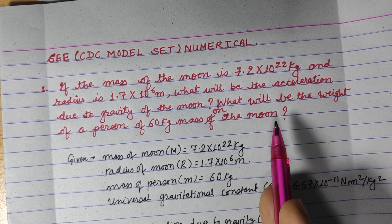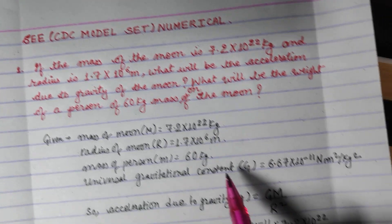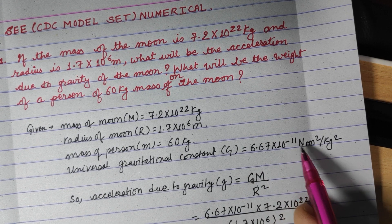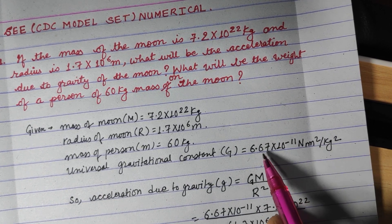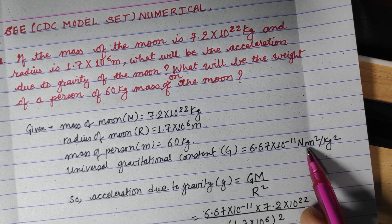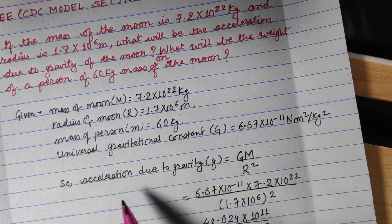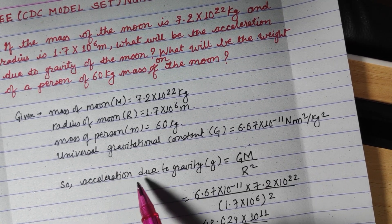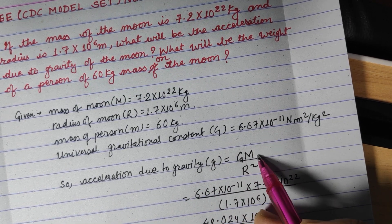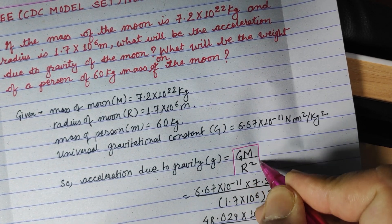For Universal Gravitation, we need the standard value of capital G: 6.67 into 10 to the power minus 11 Newton meter square per kg square. Now we need to write the formula — acceleration due to gravity: small g is equal to capital G times capital M upon R square.